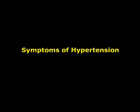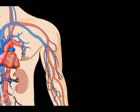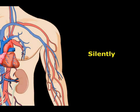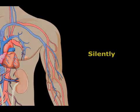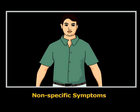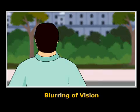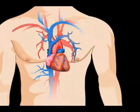What are the symptoms of hypertension? Uncomplicated high blood pressure usually occurs without any symptoms — silently. Because the disease can progress to develop several potentially fatal complications. Some people, however, have non-specific symptoms such as headaches, dizziness, or blurring of vision.